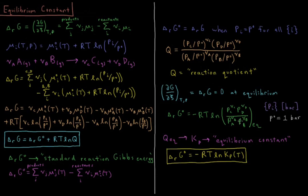The reaction quotient evaluated at equilibrium has a special name: the equilibrium constant, or K_P when expressed in terms of the pressures of the gas species. So ΔrG° = −RT·ln(K_P). Note that the equilibrium constant is a function of temperature, because all the standard chemical potentials are functions of temperature, but it is not a function of pressure. Changing the pressure of the system will not change the equilibrium constant, but changing the temperature will.